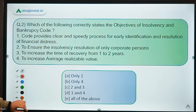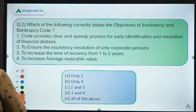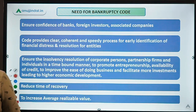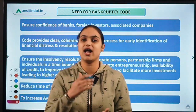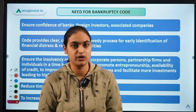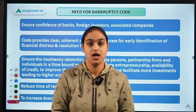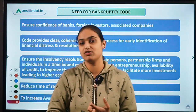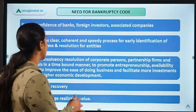Let's move on to question number two, which asks which of the following correctly states the objectives of the Insolvency and Bankruptcy Code. Let's first discuss some objectives. It's a law to handle all insolvency and bankruptcy cases — helping in resolution, deciding whether to liquidate assets or restructure the business. It also helps in time-bound recovery, which was not covered under previous legislation or NPA resolution steps.